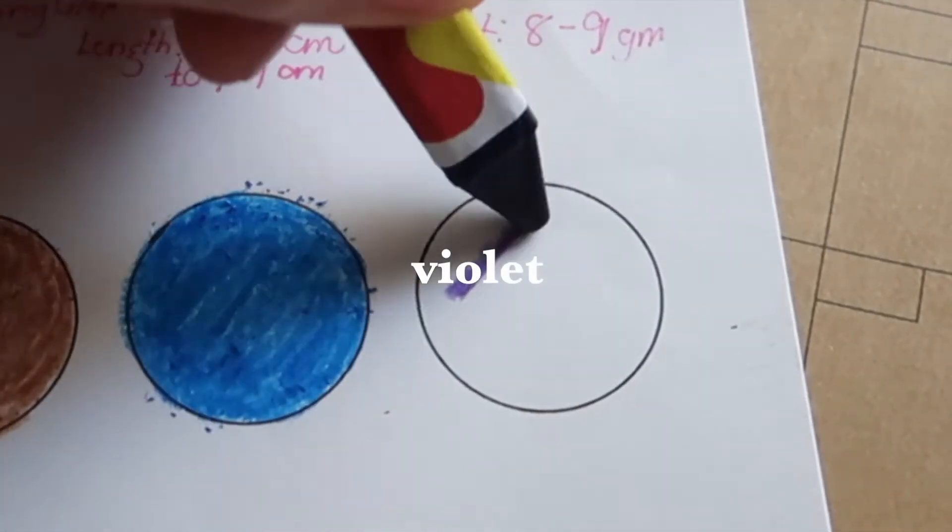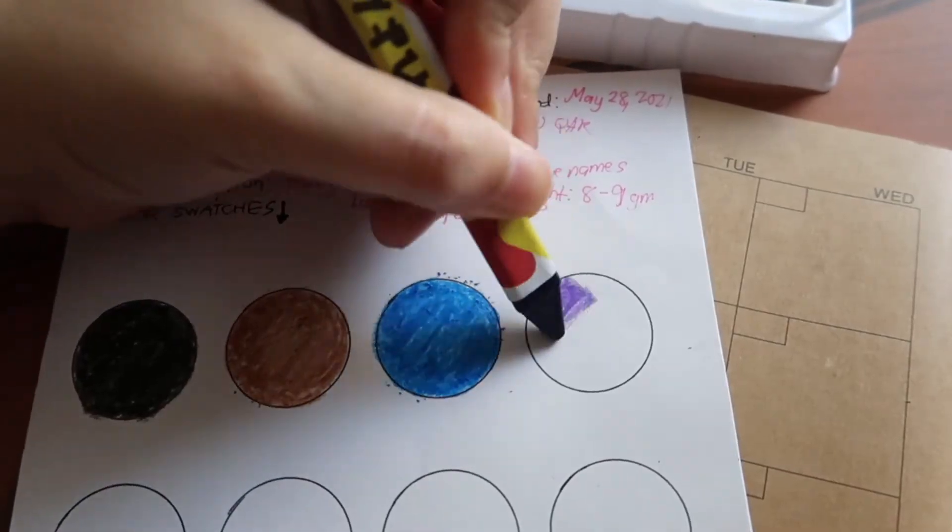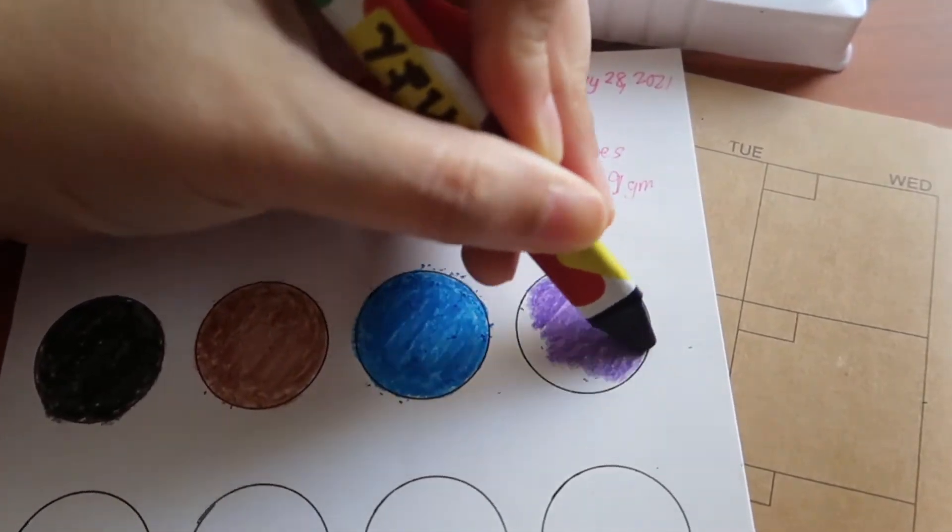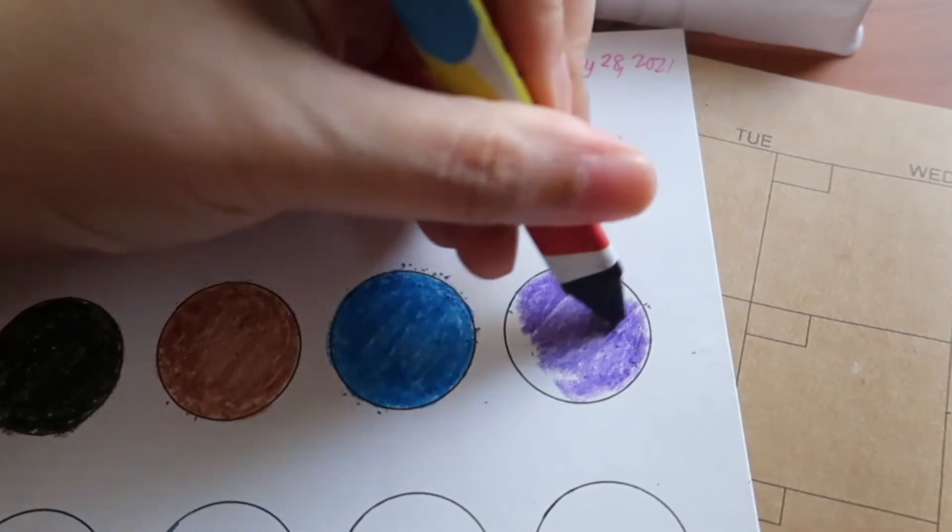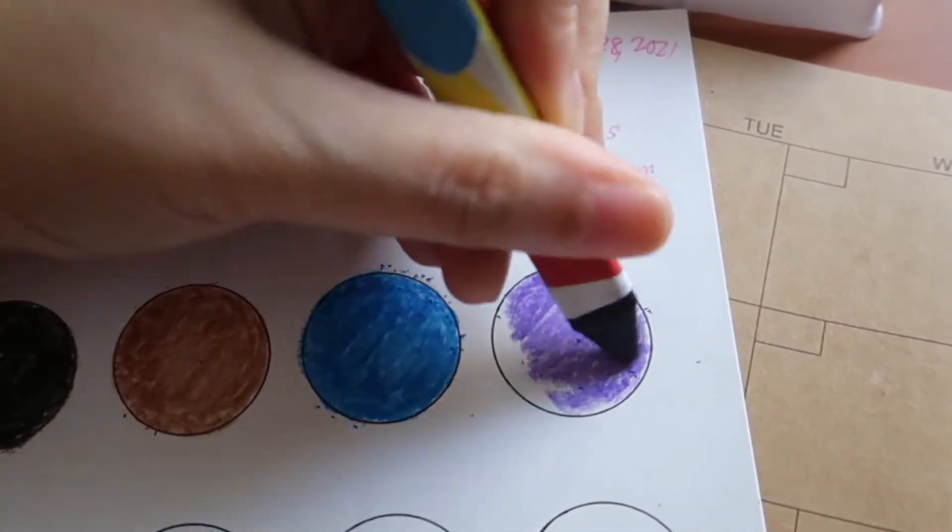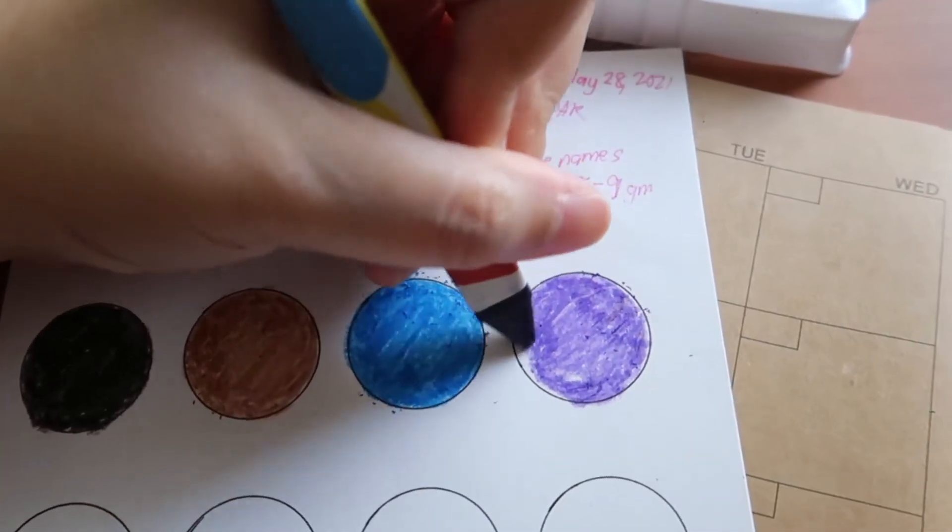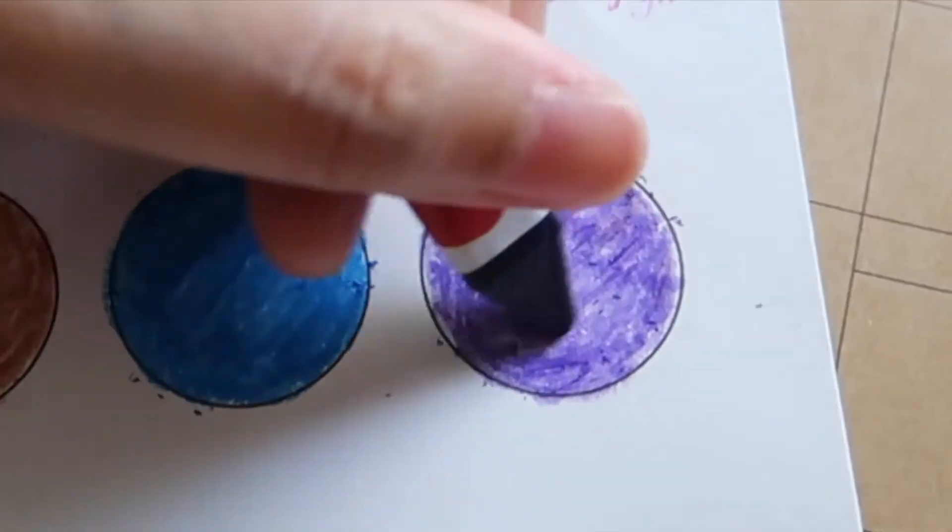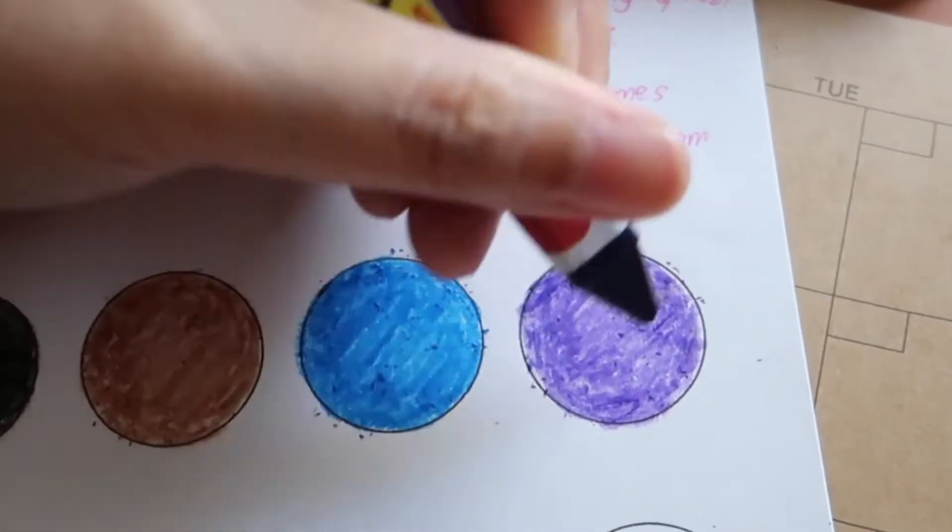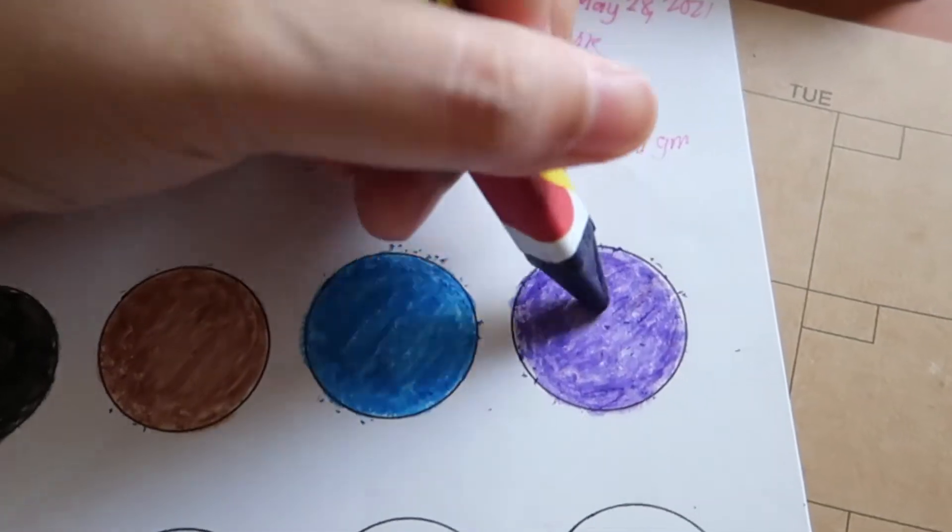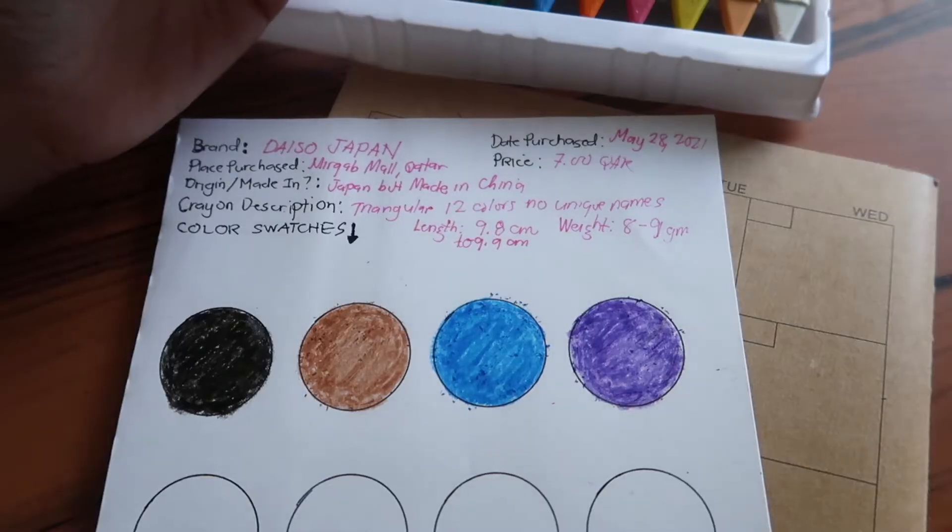Now on to the violet. I really enjoy using crayons when I was younger, and now I'm finding joy with this again. Very crumbly also.